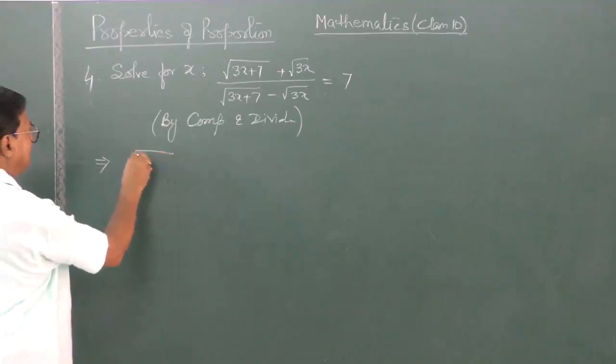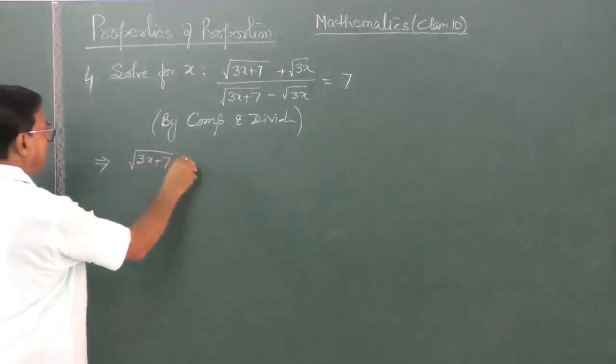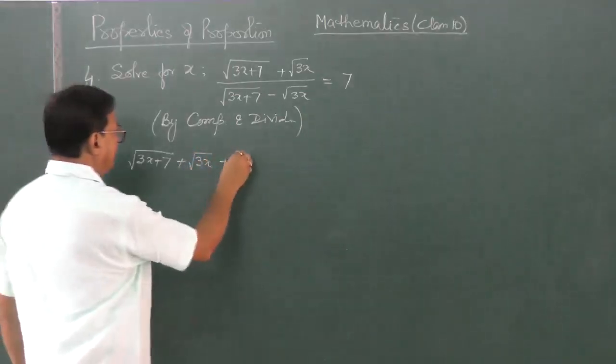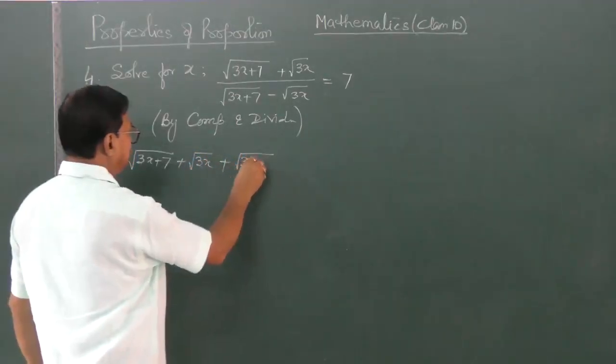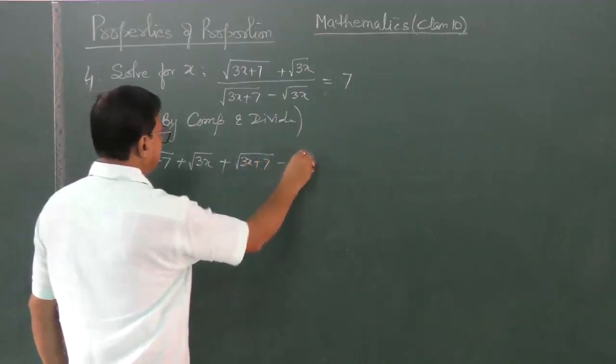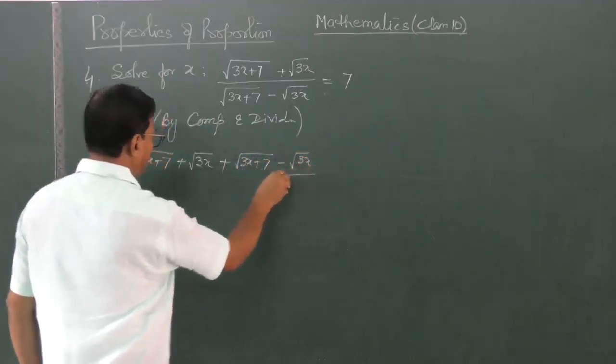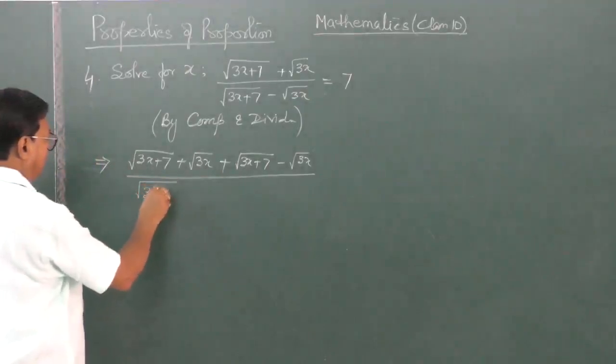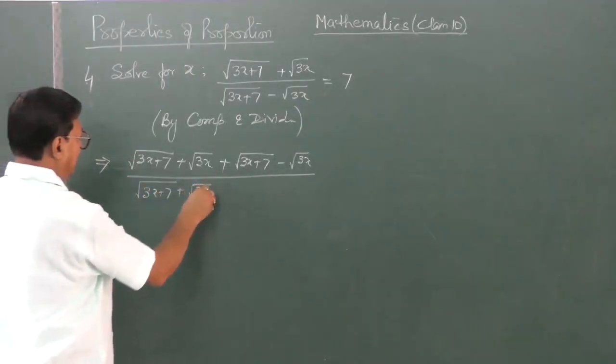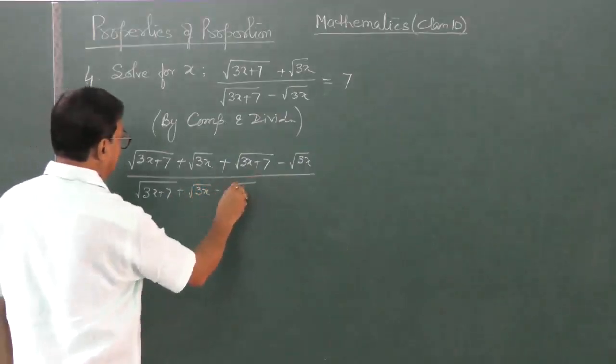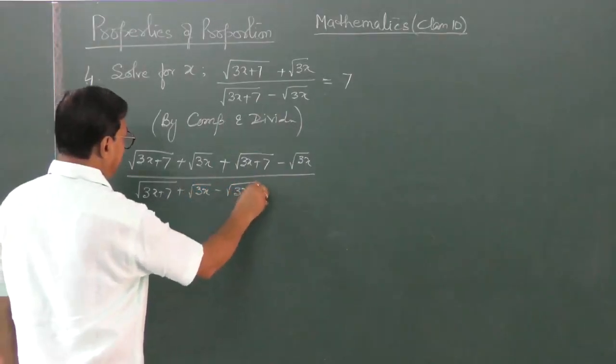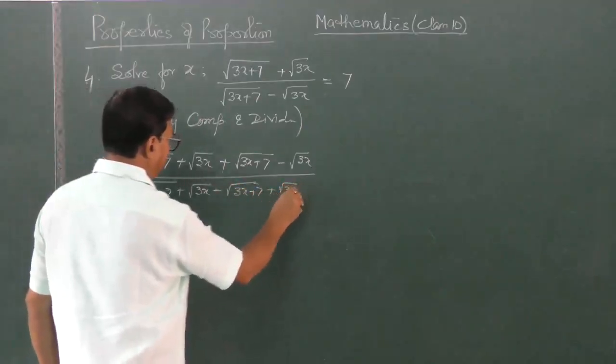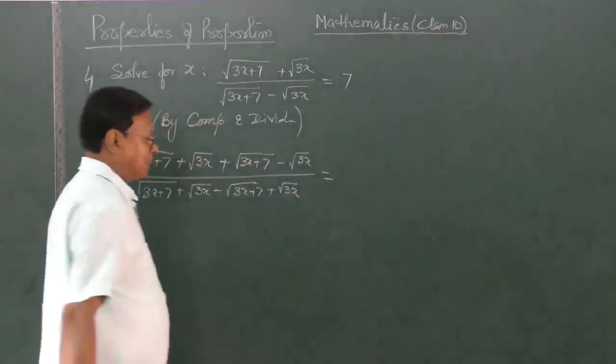So componendo dividendo. This is root 3x plus 7 plus root over 3x. Numerator plus the denominator, here also numerator minus the denominator. I have not used the bracket again but you are supposed to use a bracket, otherwise you make a mistake.